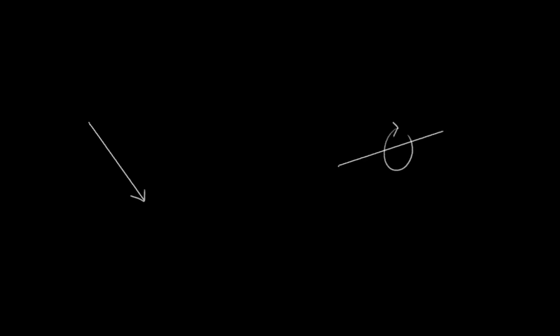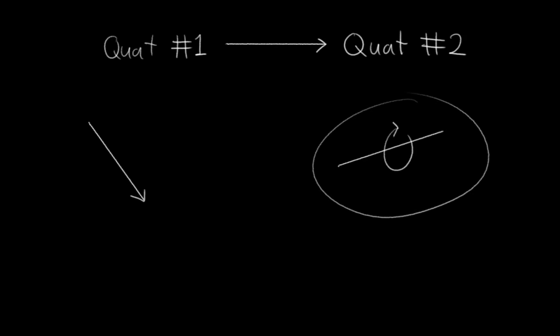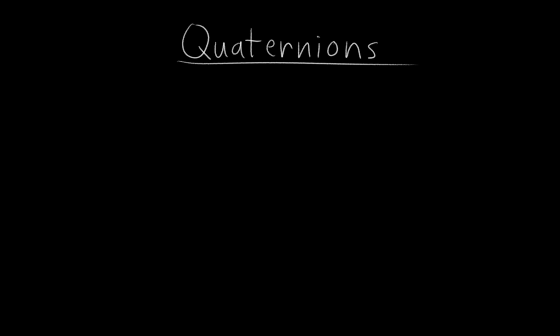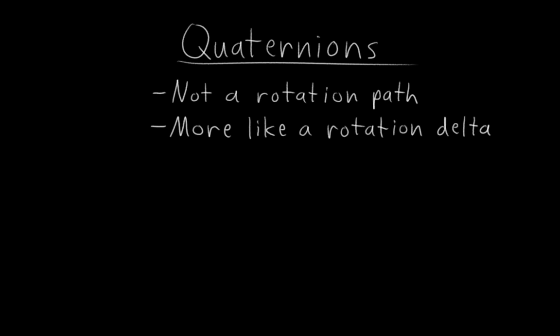Recall that when I was discussing axis angle rotations, I mentioned that for rotations, the equivalent of a straight line, the most direct path between two positions, is a rotation around a single axis. Well, it turns out that interpolating between two quaternions always takes this straight line path. And moreover, the nature of quaternions means that whatever interpolation scheme we choose, be it linear, Bézier, or anything else, it will behave consistently and predictably when interpolating. And this is no coincidence.